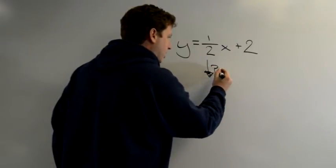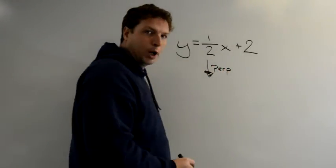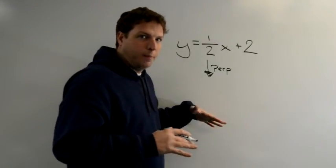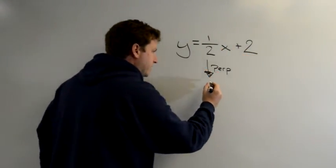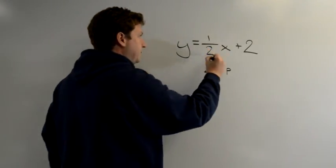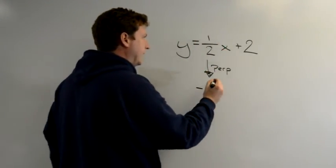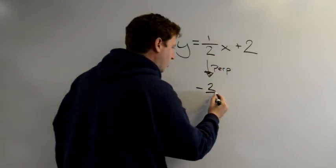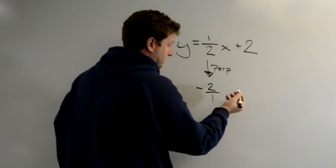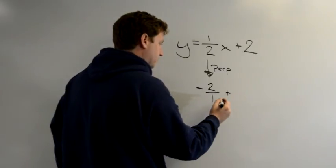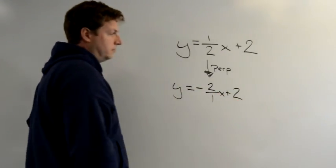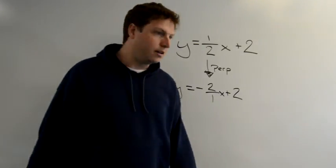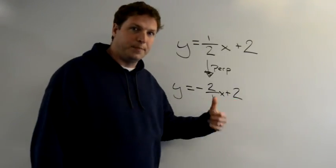To find the line that is perp to this line, it's going to have a slope of... this is positive so it must be negative and then I need to flip this, 2 over 1. That works. They intersect right here at the y-intercept, perpendicular lines.